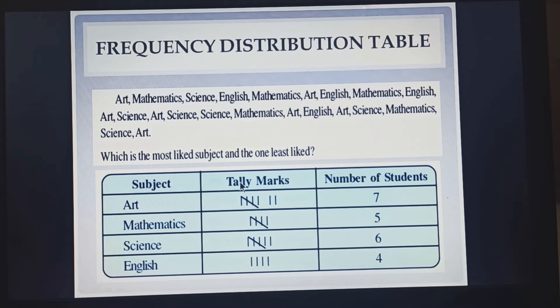The second column will contain tally marks, which we have learned in class 6. And the third column is the frequency. Here we have the number of students, so it is written as number of students.